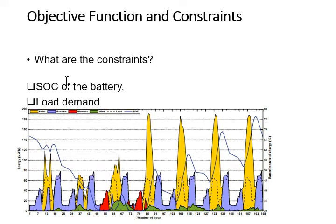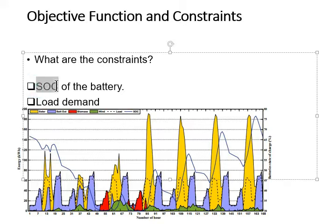There are two constraints of this hybrid optimization. The first one is to maintain the SOC of the battery throughout the yearly simulation. The battery should not be discharged below the depth of discharge. If you see the SOC plot here, it is clear that at each time in the weekly plot, the SOC of battery is not below 30%.